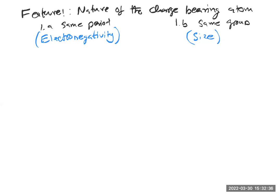Now let's think about why this is the case. Consider two anions from the same period: N²⁻ versus F⁻. In the case of N²⁻, the charge is on the nitrogen atom, and in the case of F⁻, the charge is on the fluorine atom. Fluorine has a greater attraction towards electrons because it is highly electronegative — it has more protons than nitrogen.